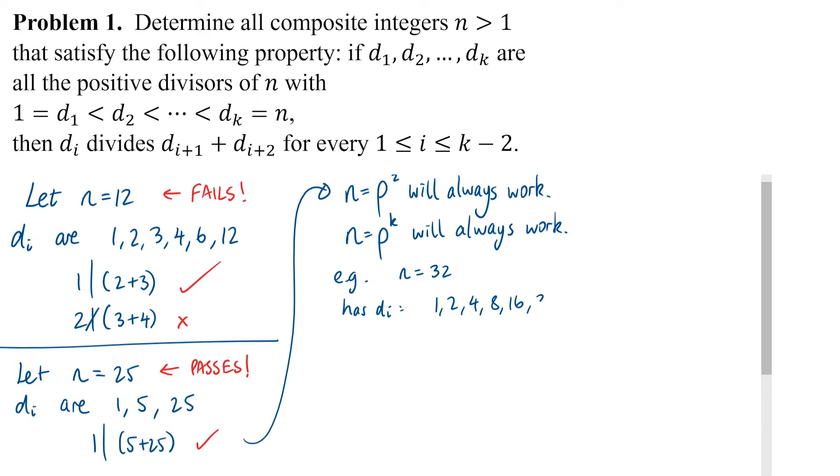The divisors are in order 1, 2, 4, 8, 16, 32. In each case we can see that each divisor is going to divide the sum of the next 2, so we're fine.